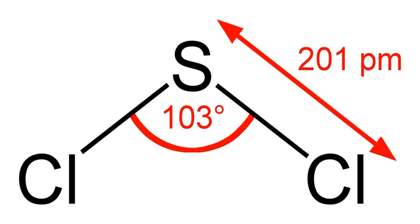Sulfur dichloride is the chemical compound with the formula SCl2. This cherry red liquid is the simplest sulfur chloride and one of the most common. It is used as a precursor to organosulfur compounds.